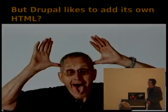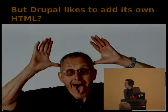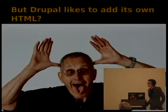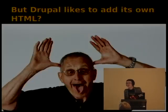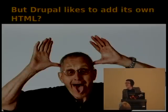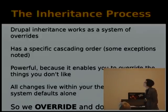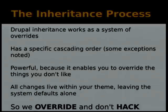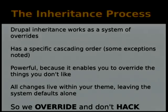This gets us to the interesting part. Drupal likes to add its own HTML, which is a real annoyance for front-end developers coming from a non-Drupal background. The Drupal inheritance process is basically a bunch of system overrides with a specific cascading order. If we think about how cascading style sheets work and how inheritance works in file permission systems, it's a similar approach.